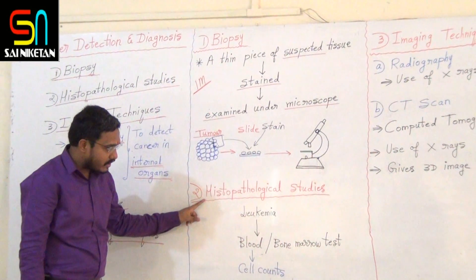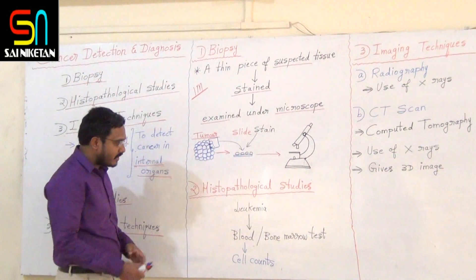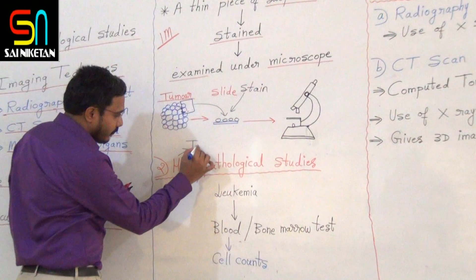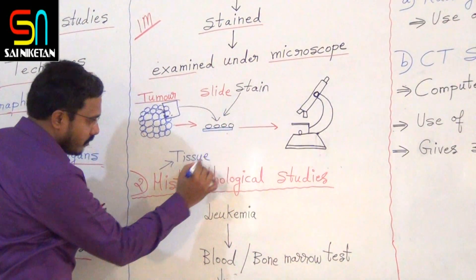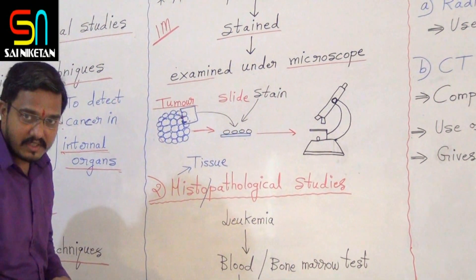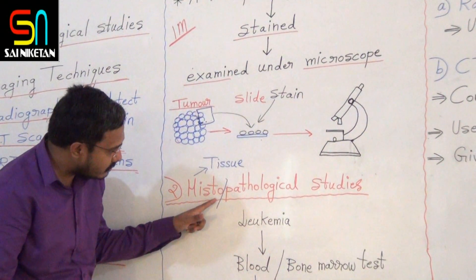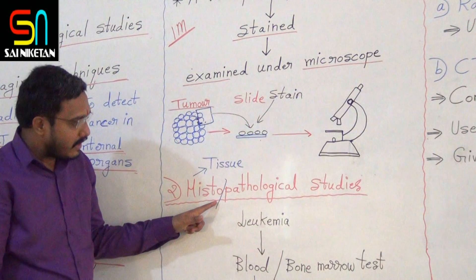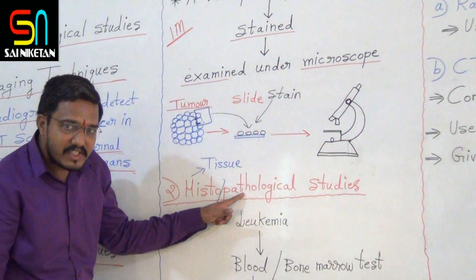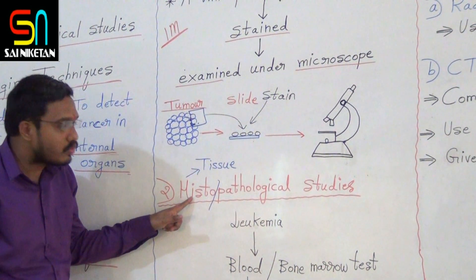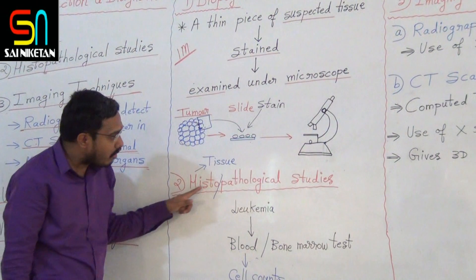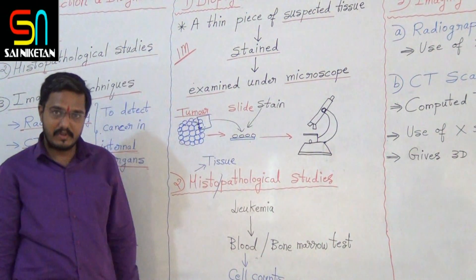Now come to the second one — histopathological studies. Histo means tissue. Pathology is the study of disease. So, histopathological study is the detection of disease by studying tissue. Detection of disease by studying tissue is called histopathological studies. Let us see one example.